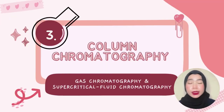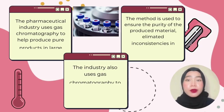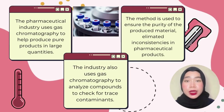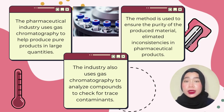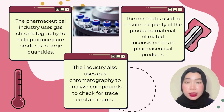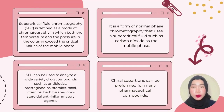My name is Noor Elfa Farisah binti Zamani. I want to present about column chromatography, which is gas chromatography and supercritical fluid chromatography. The pharmaceutical industry uses gas chromatography to help produce products in large quantities. The method is used to ensure the purity of the produced material and eliminate inconsistencies in pharmaceutical products. The industry also uses gas chromatography to analyze compounds and check for trace contaminants.